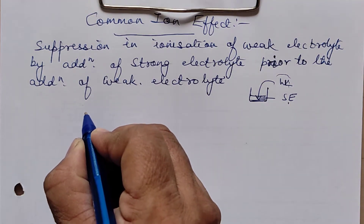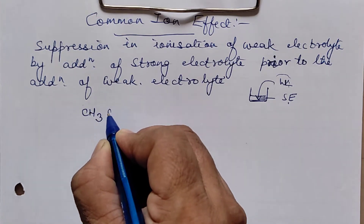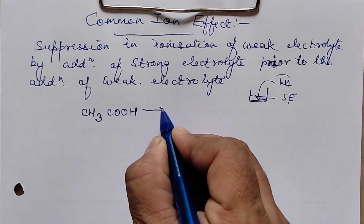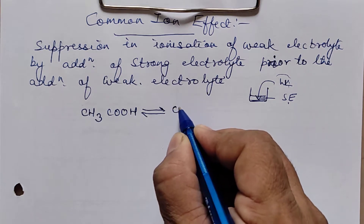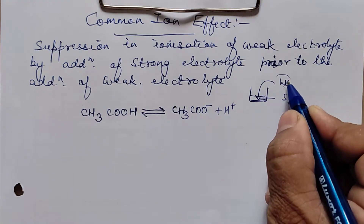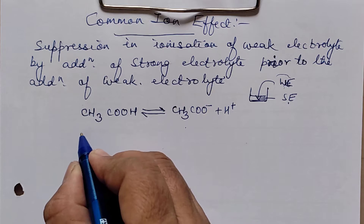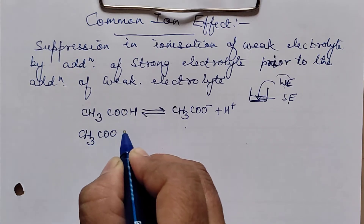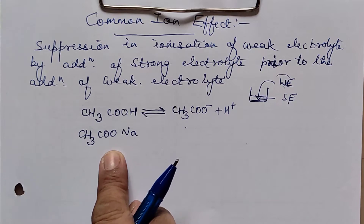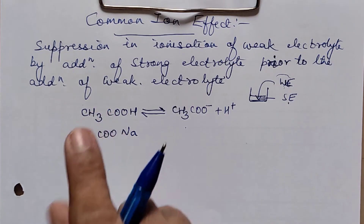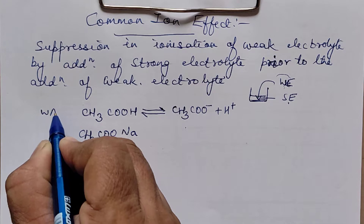For example, suppose I take a weak electrolyte such as acetic acid. It is a weak electrolyte, meaning it will not ionize completely. It is represented with a reversible arrow, forming the acetate anion and H⁺. Now, the strong electrolyte already present in the solution — say sodium acetate — has a common ion with this weak electrolyte.